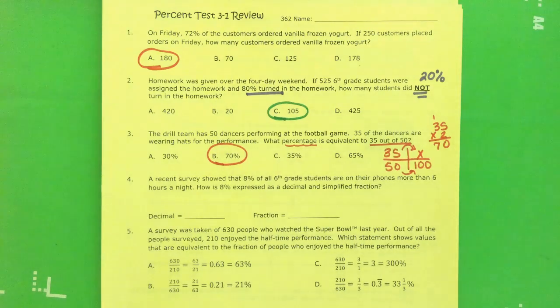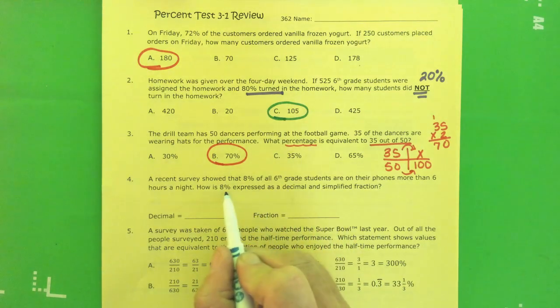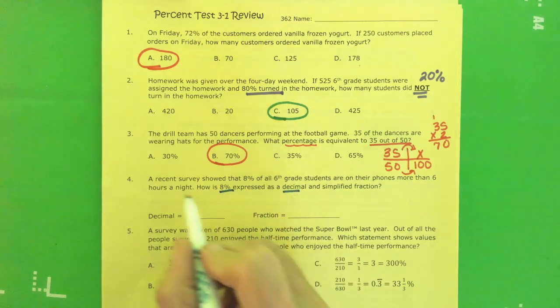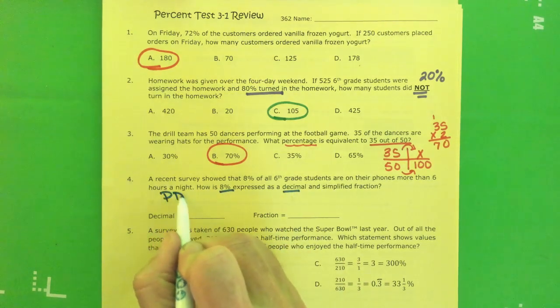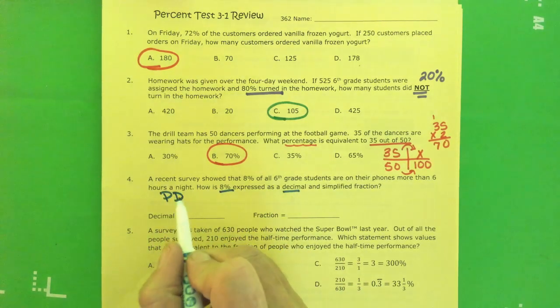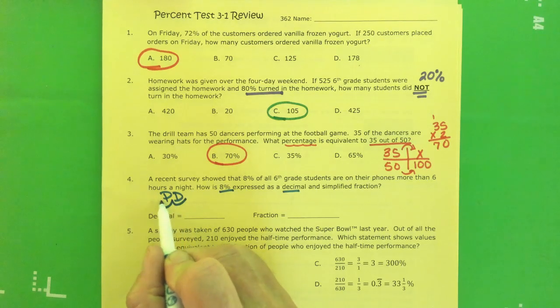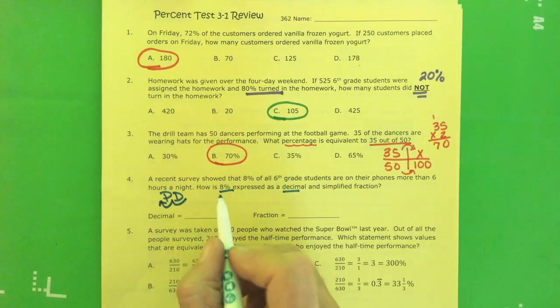Number 4. A recent survey showed that 8% of all 6th grade students are on their phones more than 6 hours a night. How is 8% expressed as a decimal and a simplified fraction? To get from a percent to a decimal, remember PD? That was police department where we go back it up, back it up. We back it up two spaces.